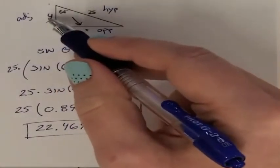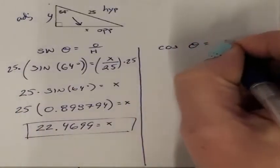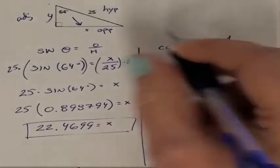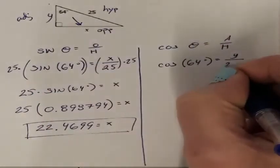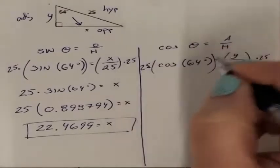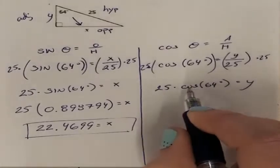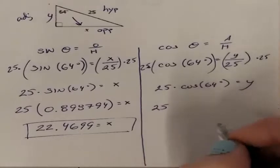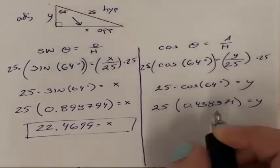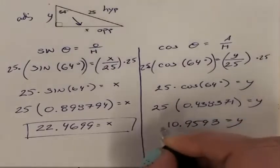Now I need my adjacent, my Y. I'm going to use hypotenuse and adjacent, which is cosine. Cosine of theta equals adjacent over hypotenuse. My theta is 64 degrees, the adjacent is the missing Y, and my hypotenuse is 25. Multiplying both sides by 25, I get 25 times cosine of 64 degrees equals Y. Cosine of 64 degrees is 0.438371, and multiplying that by 25 gives me 10.9593 as my Y value.